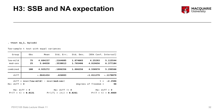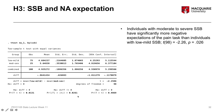Here is our output from the independent samples t-test. We're comparing mean negative affect scores between the two groups. Looking at the descriptive statistics, the low-mild somatic symptom burden group have a lower negative affect score compared to the moderate-severe somatic symptom burden group, who have a higher mean negative affect score. Looking at the t-statistic and the corresponding p-value, because the p-value is less than 0.05, there is a statistically significant difference in negative affect scores between the low-mild and the moderate-severe somatic symptom burden groups.